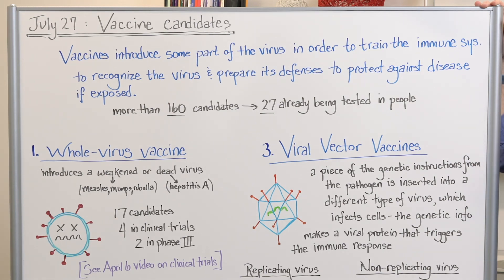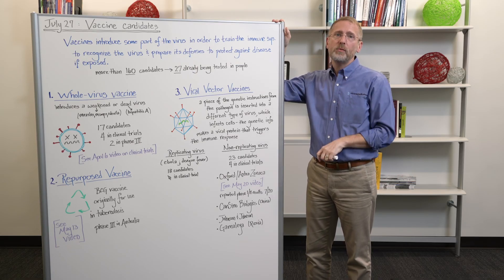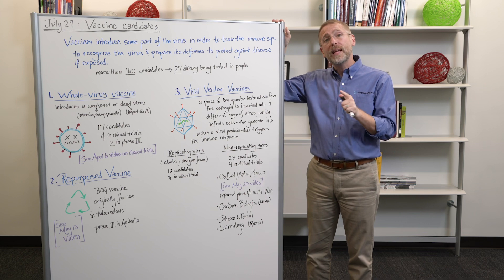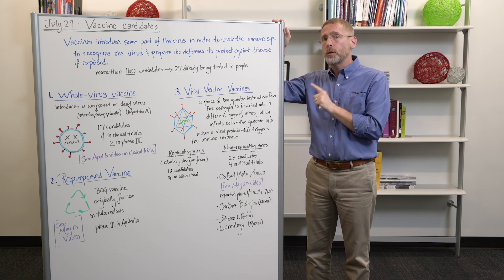and can quickly mount a response and shut the infection down. There are more than 160 potential candidates in our pipelines for vaccine development. 160. That is spectacular. And 27 of them are already being tested in humans in clinical trials.